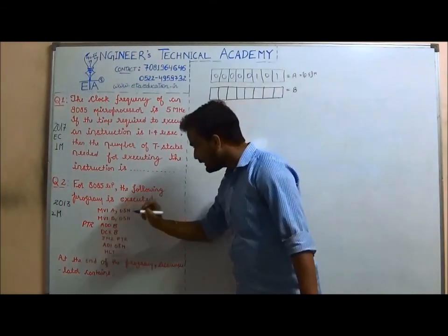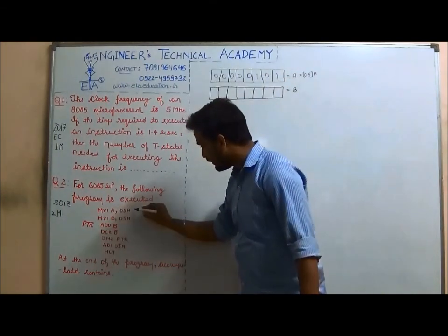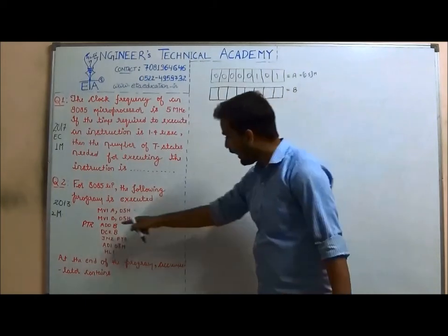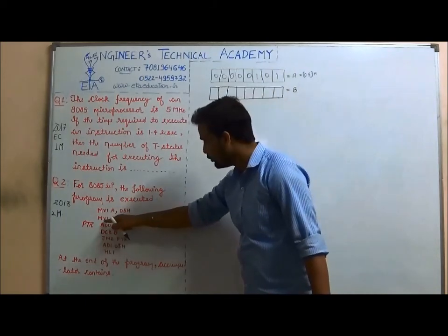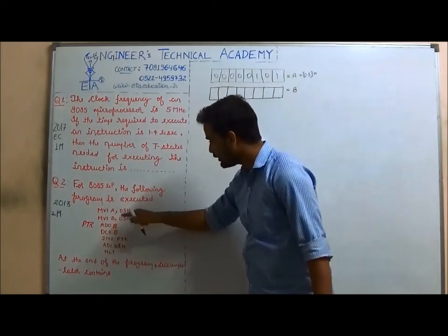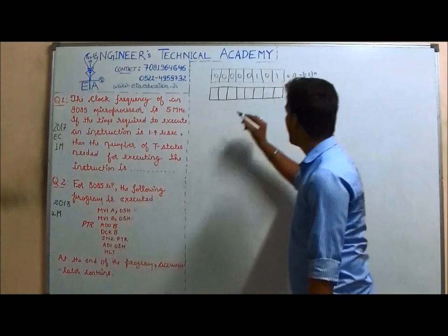The second statement: MVI — move immediate data 05H into B. So we load 05H into register B.